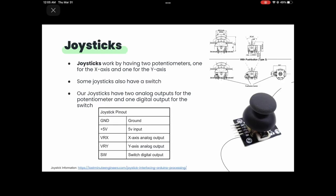About the joystick: joysticks work by having two potentiometers — one on the x-axis and one on the y-axis. They return an analog value between 0 and 1023 for each axis, giving you the exact position for all 360 degrees around it. The ones we're using also have a switch, like pressing down on a game controller joystick. The pinout has ground, 5V, VRX for the x-axis potentiometer (analog pin), VRY for the y-axis (analog pin), and a switch pin (digital output).